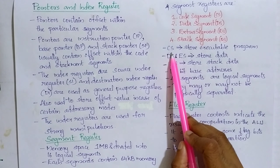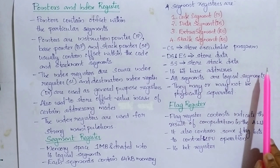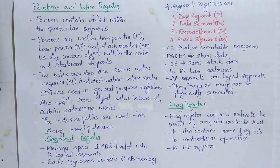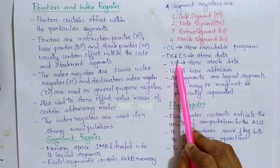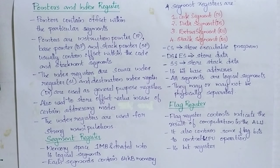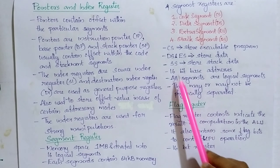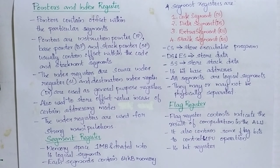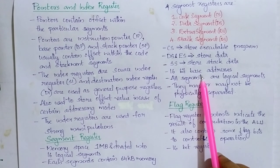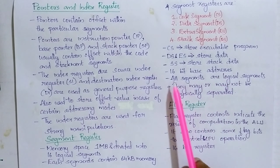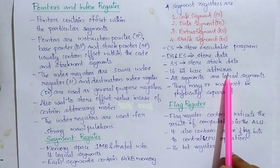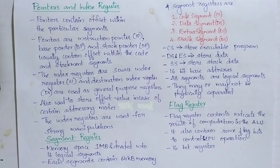CS, the code segment, is used to store the executable program. DS and ES — the data segment and extra segment — are used to store data. SS, the stack segment, is used to store stack data. The segment register contains 16-bit base addresses.